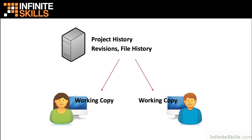Traditionally, when a team of developers has worked together, a source control system has been installed that is a centralized source control system. A centralized source control system is a client-server type of system where a server holds the source code repository that contains the project history, the revisions of the project, how it's changed over time, and the history of each individual file. When interacting with that source code system, developers will check out a working copy based on any one of those criteria, be it the latest working copy or a specific point in history.